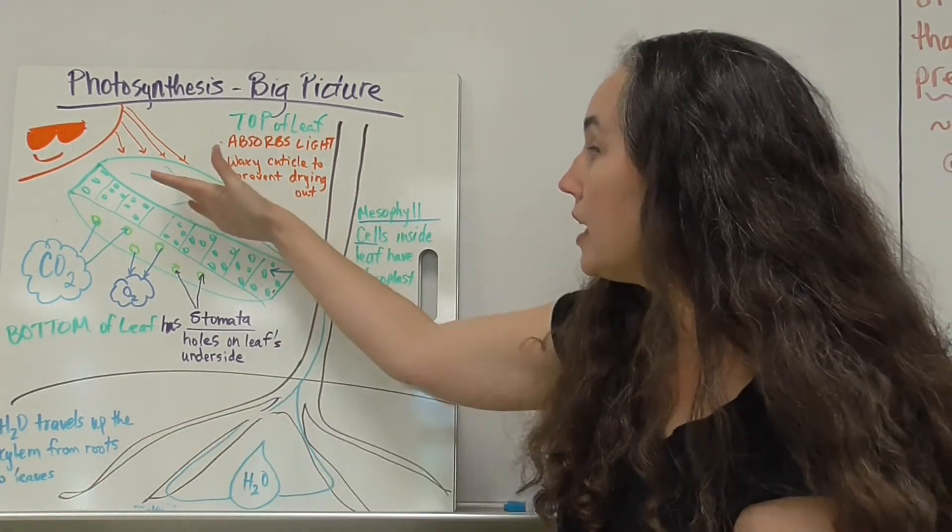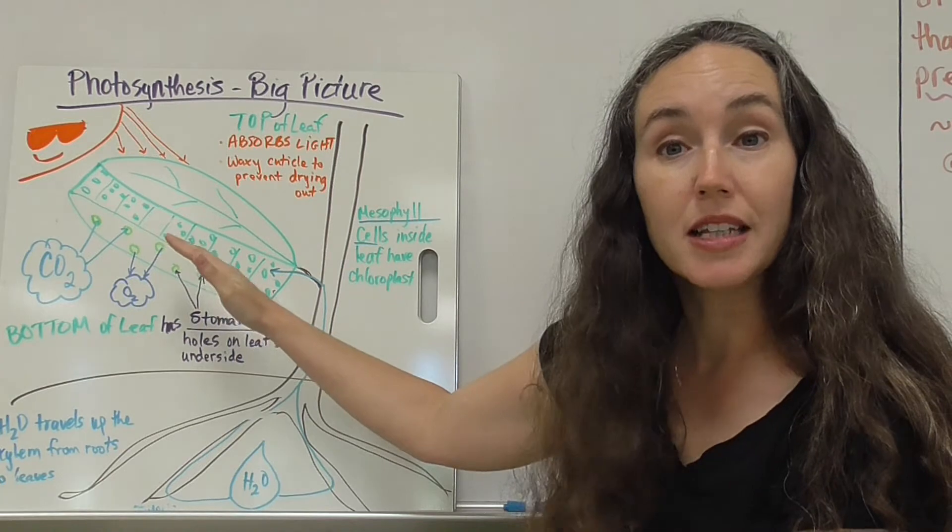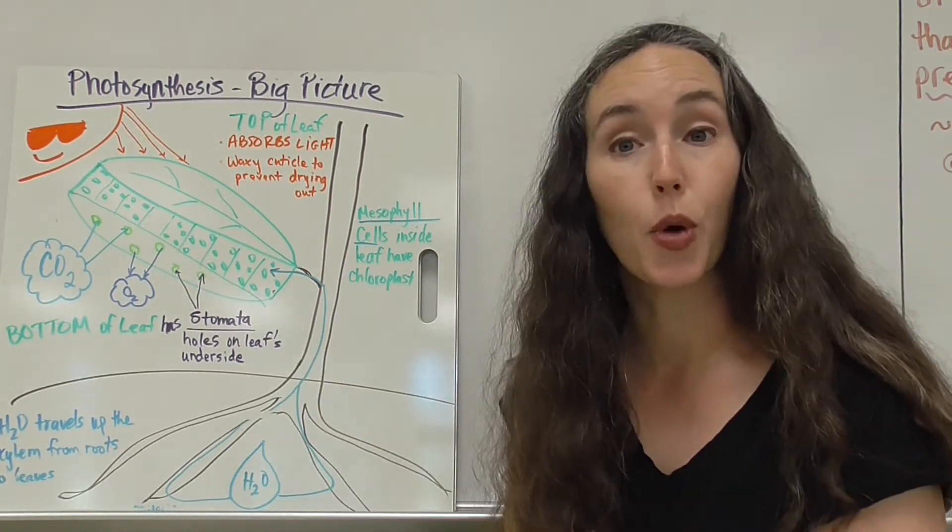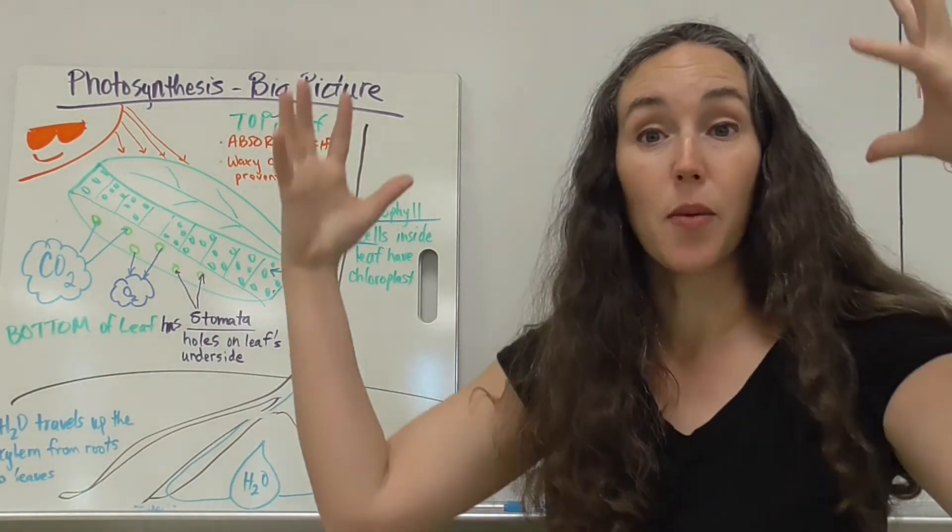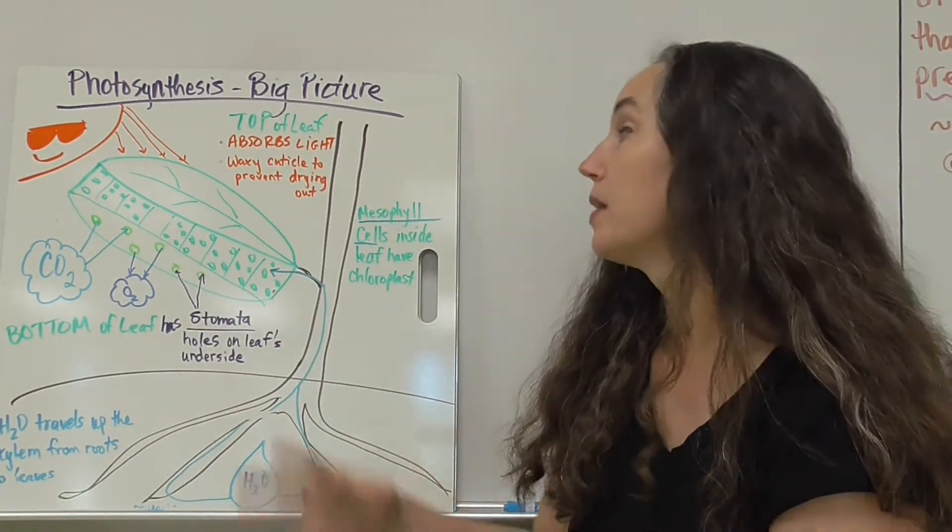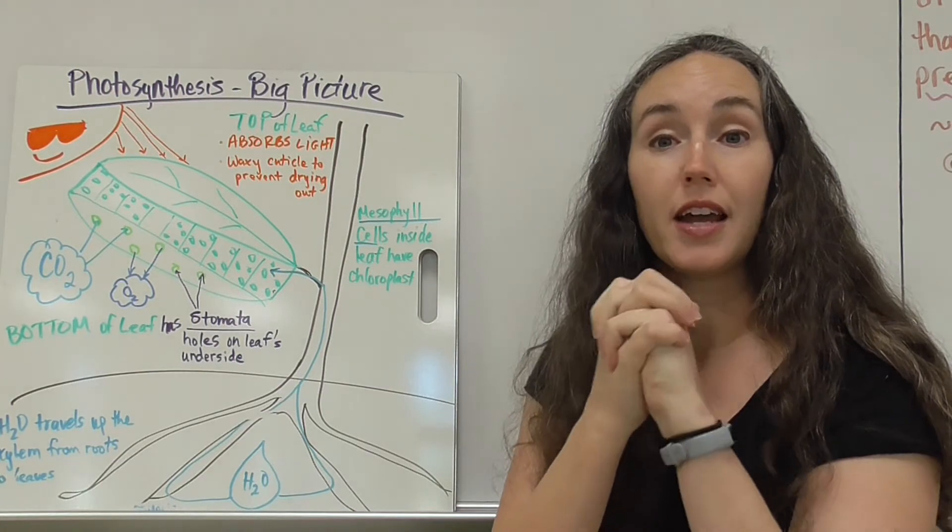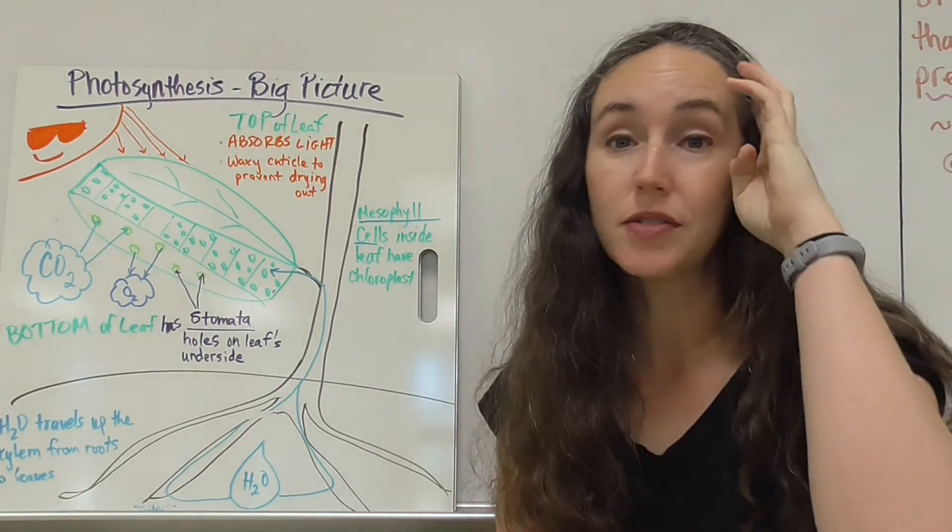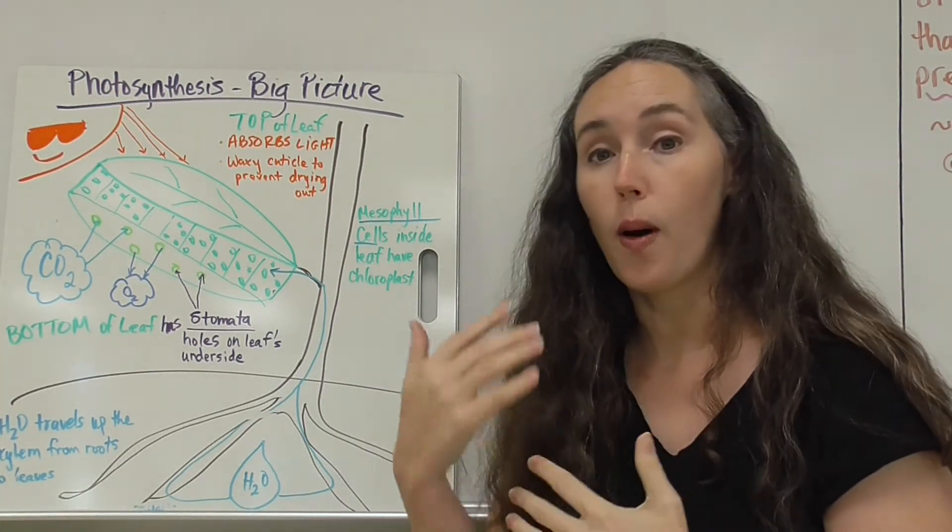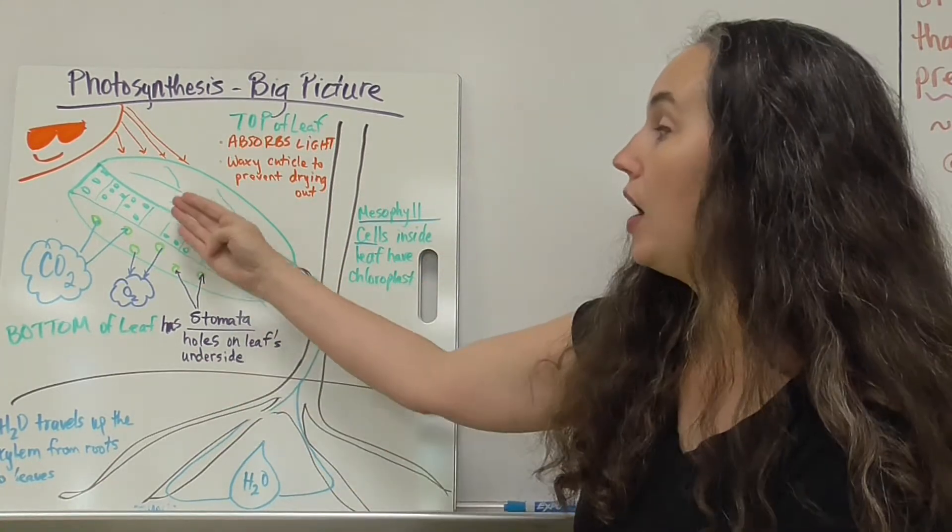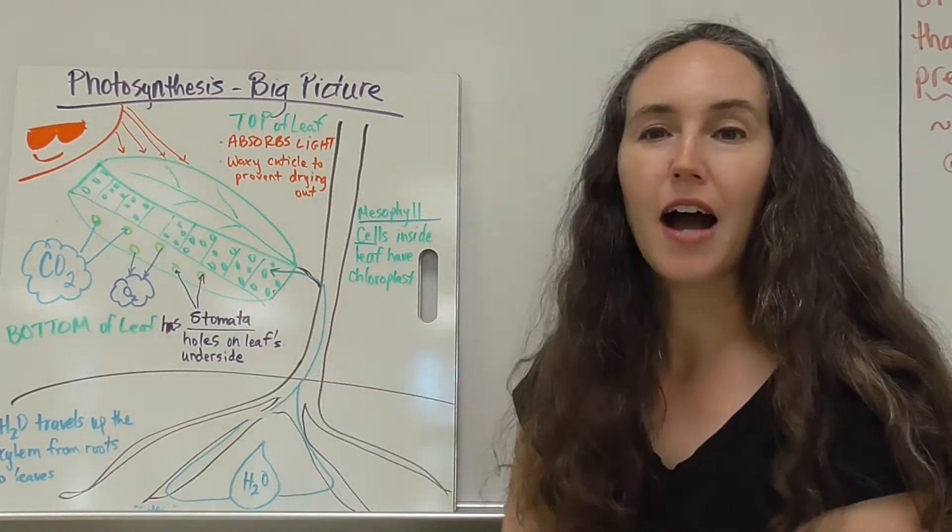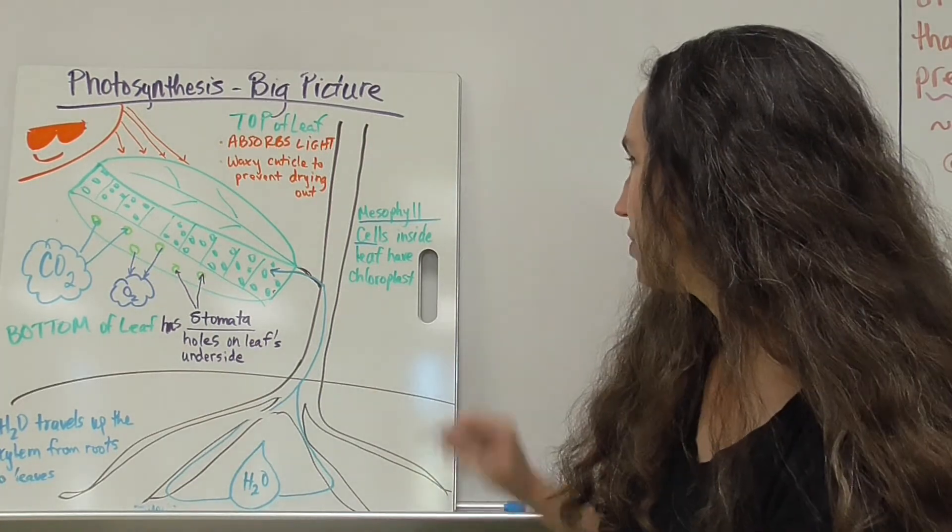So water's coming in. On the bottom of the leaves are these holes called stomata, and carbon dioxide gas is going to come out of the air and into the leaves to make glucose there in the chloroplasts of the leaf cells. Also, a byproduct of photosynthesis is oxygen gas, and that oxygen is going to leave out of the stomata on the bottom of the leaves.